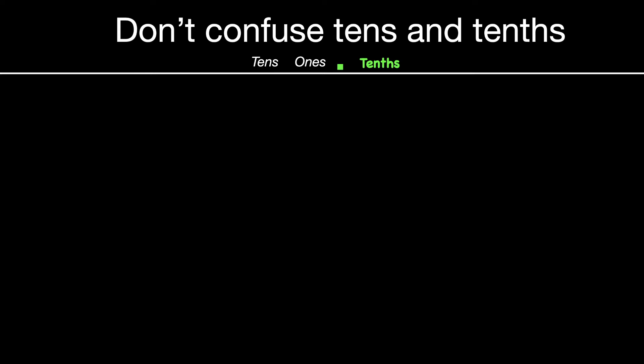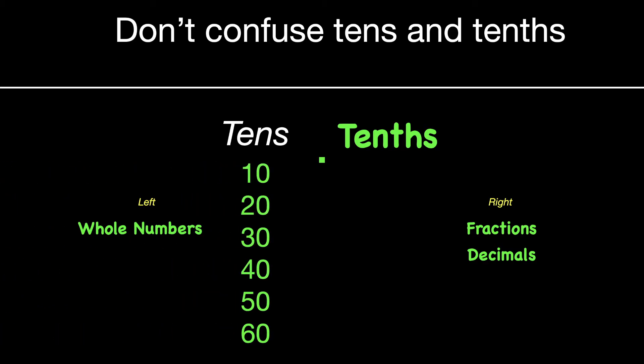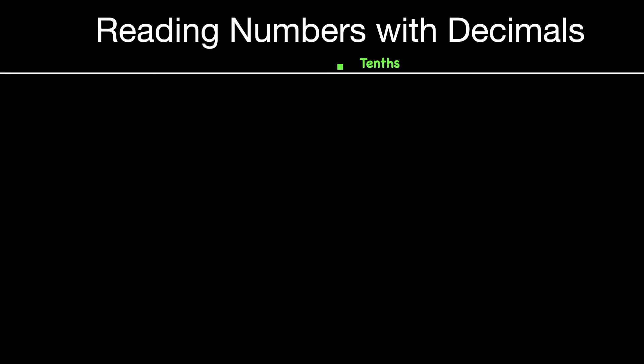It's important that you do not confuse tens and tenths. That's a common problem, because they're spelled very similar. Remember that tens are on the left side of your decimal point. Tenths are on the right side. Tens would be whole numbers, but tenths would be fractions, or in other words, decimals. When you count by tens, it would be 10, 20, 30, 40, and count like that. But tenths would be one-tenth, and two-tenths, three-tenths, and four-tenths, and would be very different. Please don't confuse tens with tenths. And the th in tenths is something important that we look at.